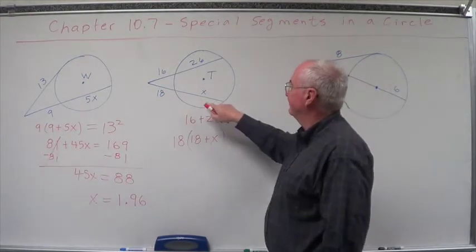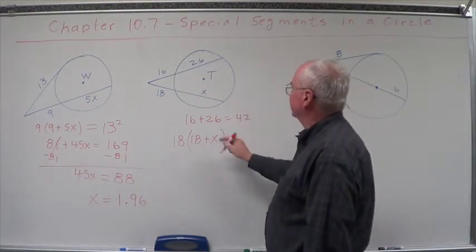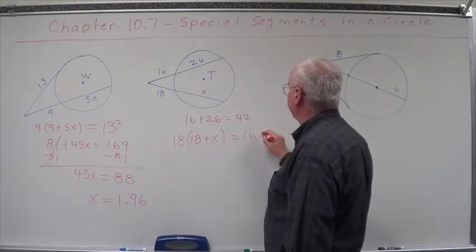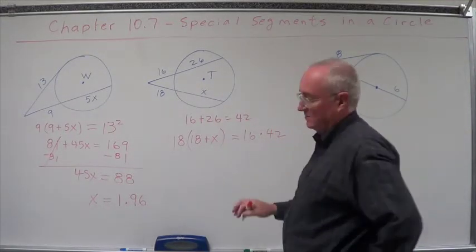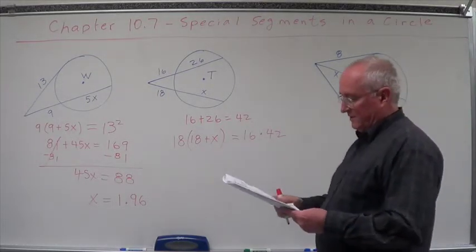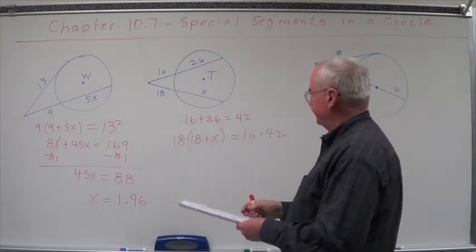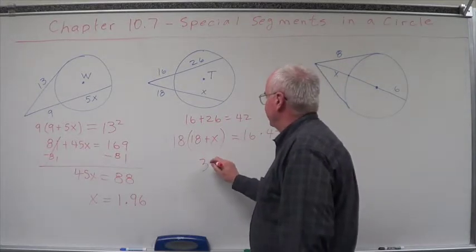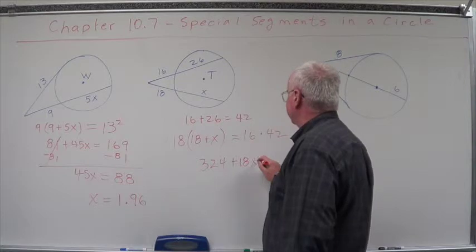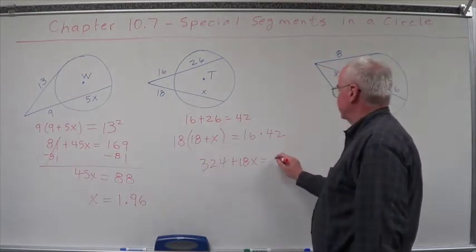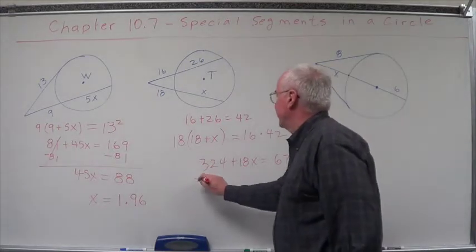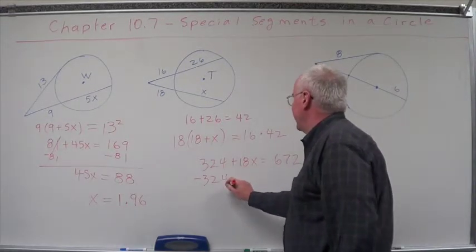The exterior portion times the whole thing equals the exterior portion times the whole thing times 42. What do we get on this?